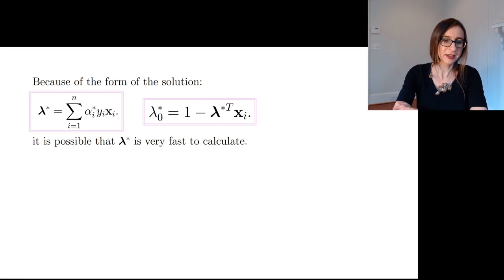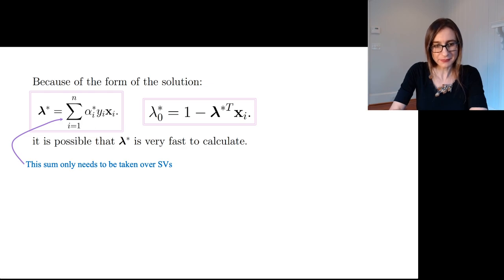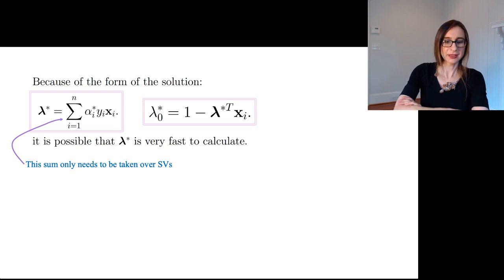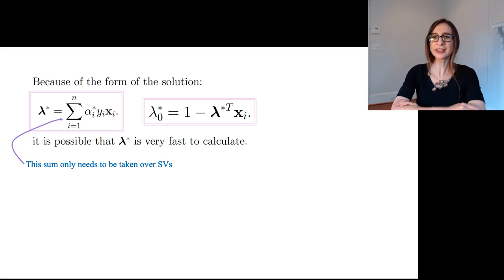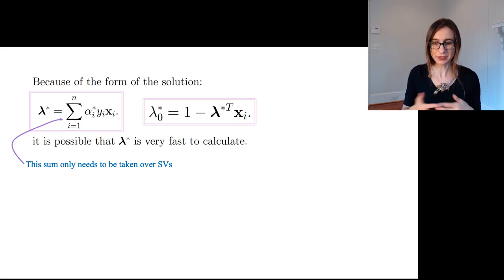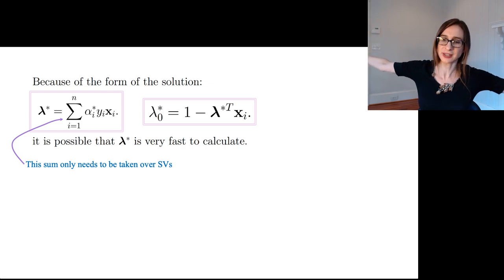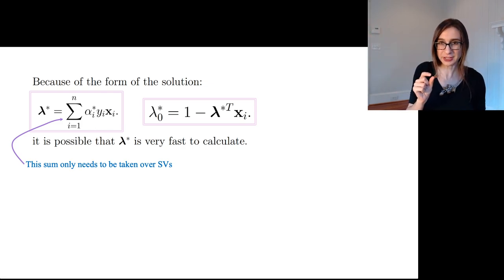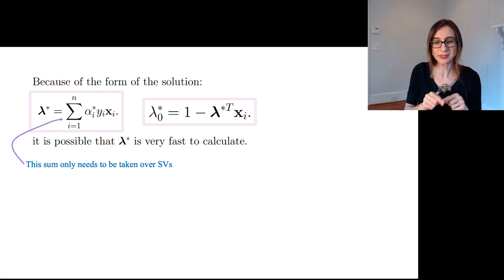Now, I want to point out a couple of important things. First, because of the form of this solution, it's possible that lambda star becomes very fast to calculate. And why is that? Well, if you think about it, this sum only needs alpha i's that are non-zero. You can get rid of all of the terms there, all of the data points i for which alpha i is zero, because they don't factor into anything. What are the points where the alphas are non-zero? Those are the support vectors. So, this whole sum only needs to be taken over support vectors. So, if you have, say, a huge data set, but only a small fraction of the points are support vectors, then the solution only depends on those points. And so, you can calculate it more quickly.